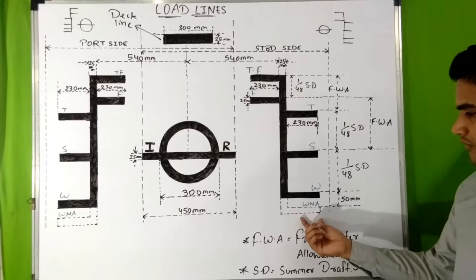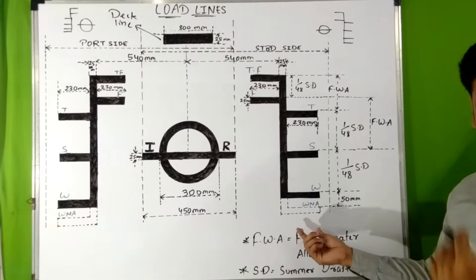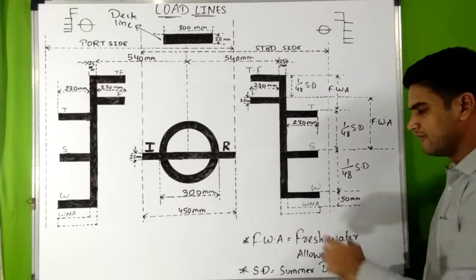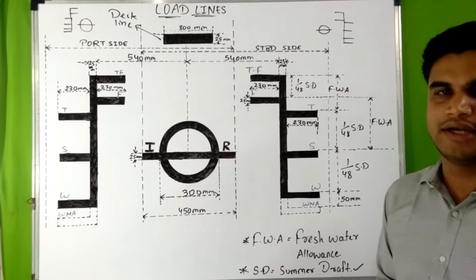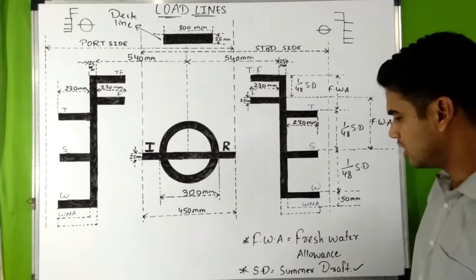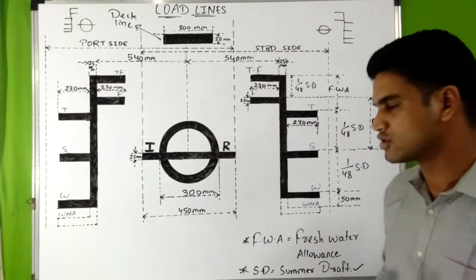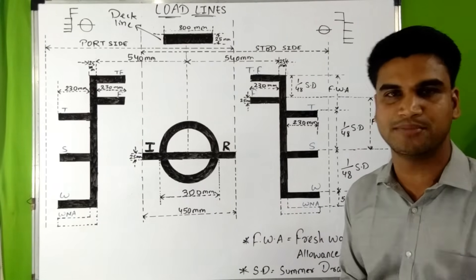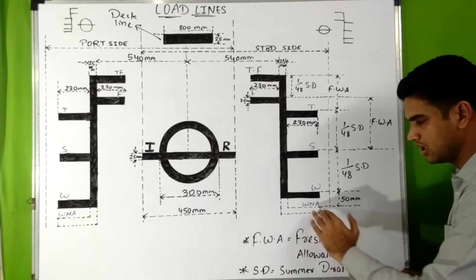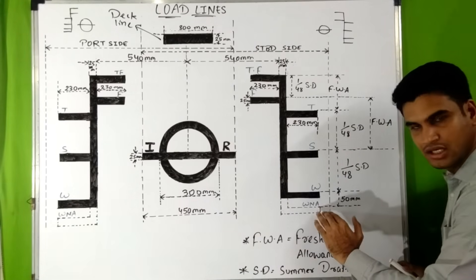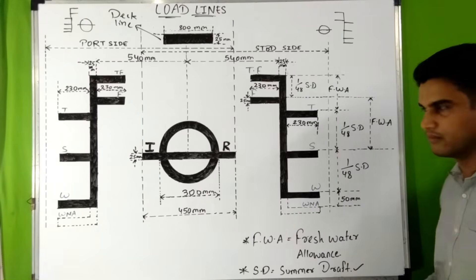There is one more marking — WNA, which means Winter North Atlantic. It is marked with dotted lines because it is only assigned to ships having a length less than 100 meters, and its upper edge is exactly 50 mm below the upper edge of the winter zone.